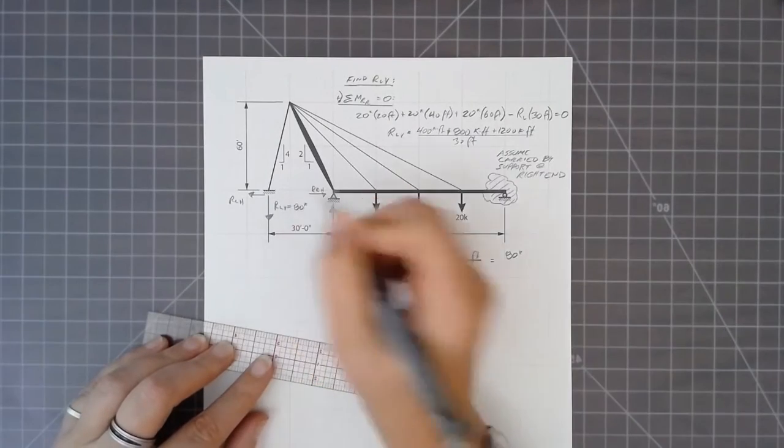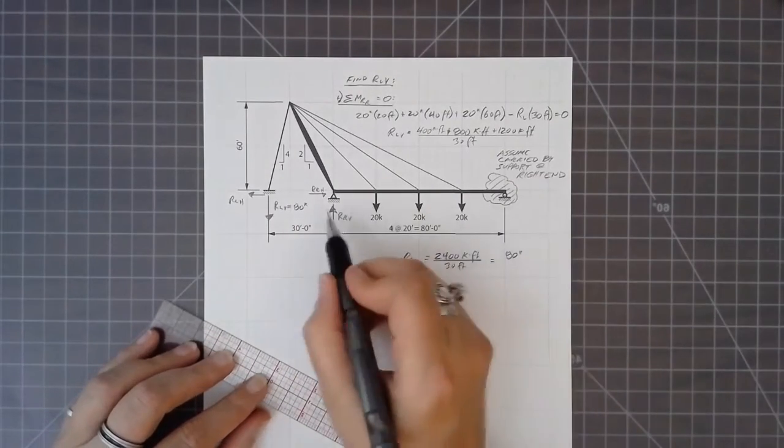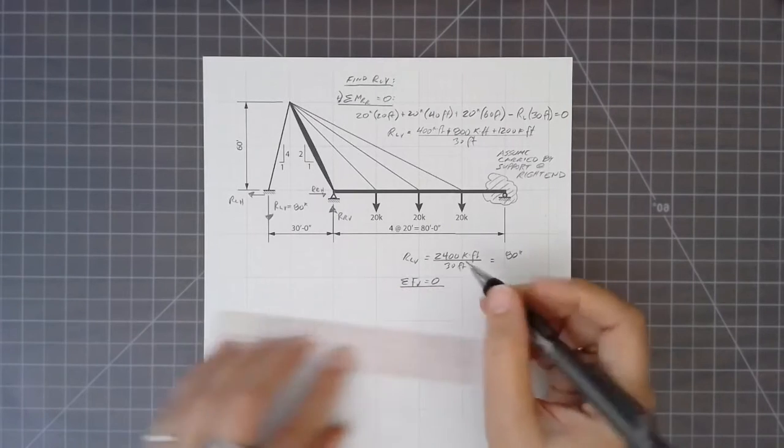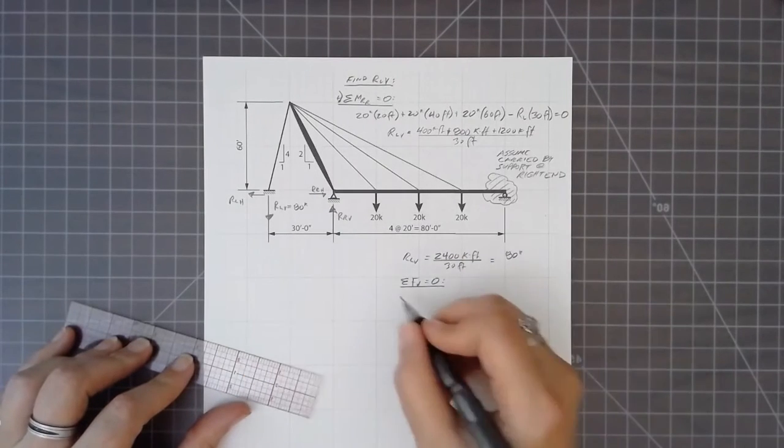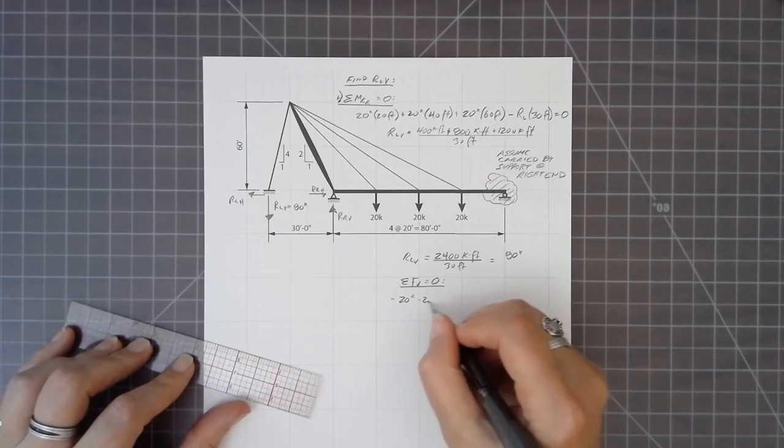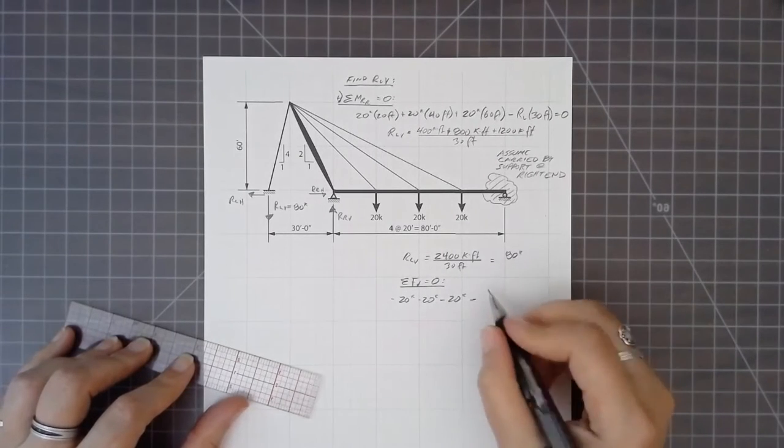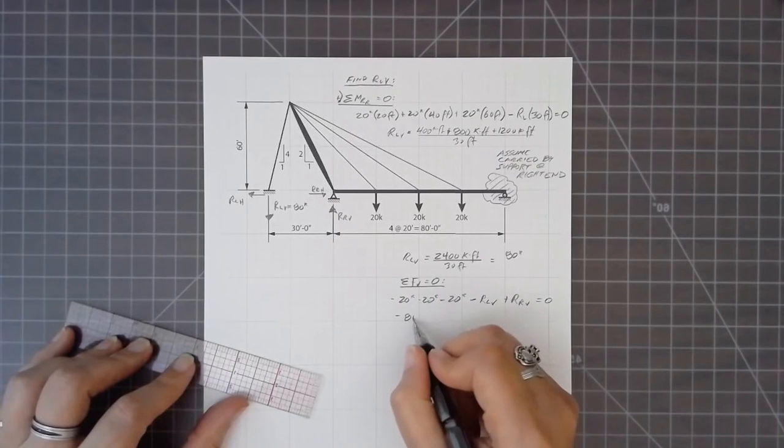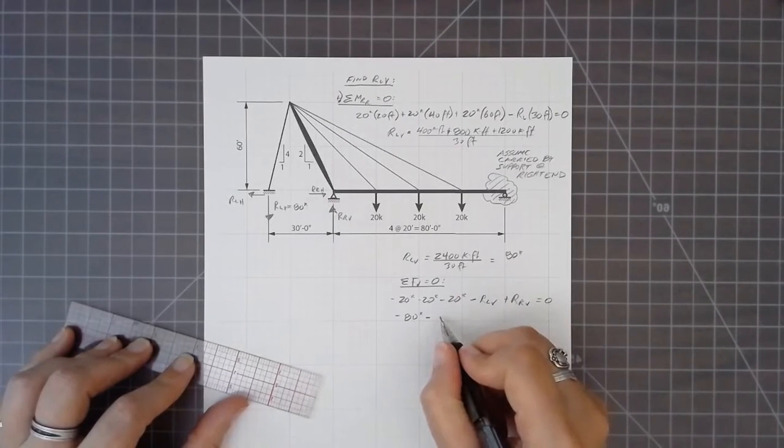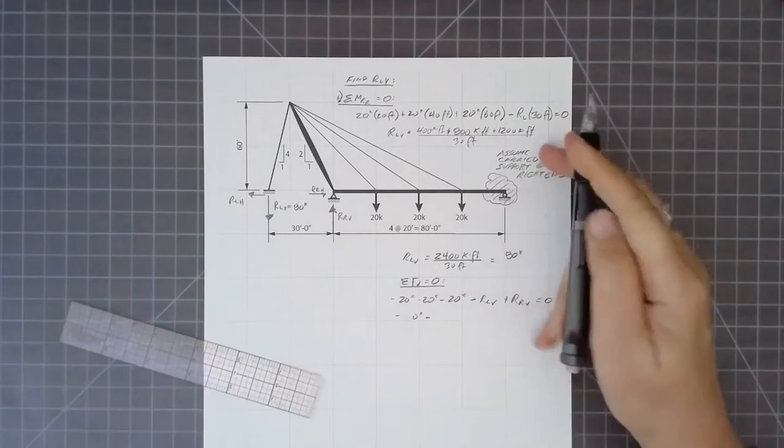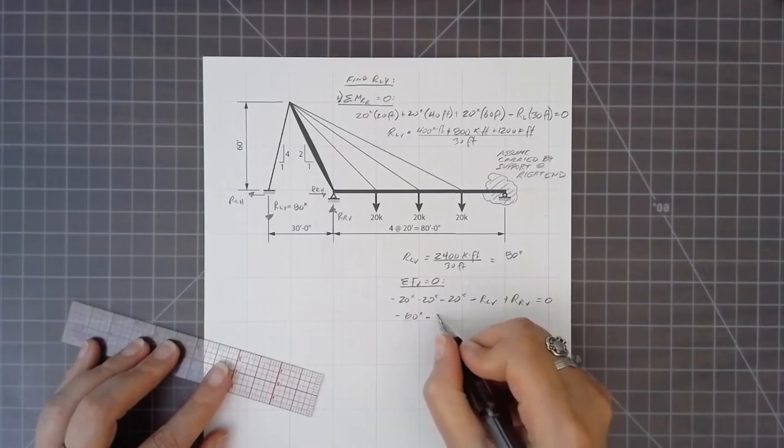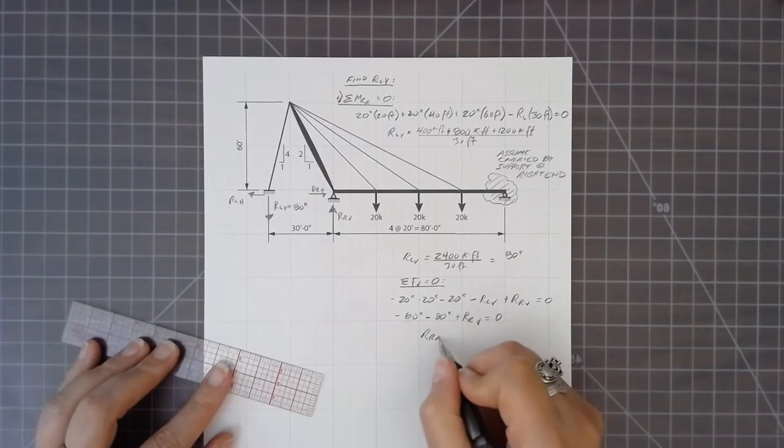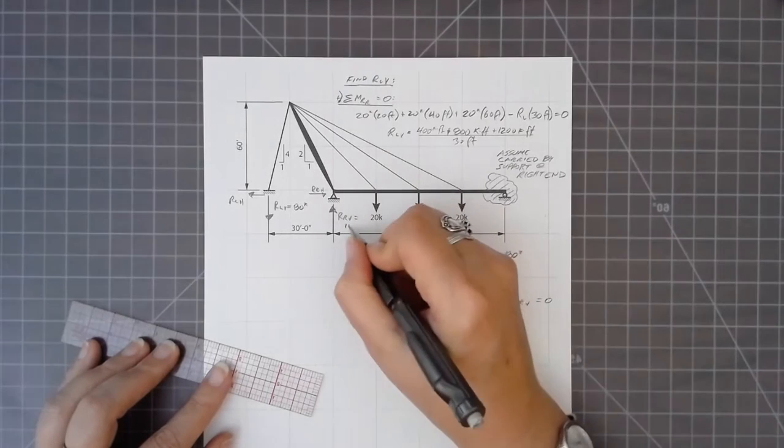So the left-hand vertical reaction then is 2400 kip-feet divided by 30 feet, and we get 80 kips as our vertical reaction at the left-hand side. Once we have that, the only remaining vertical force is the right-hand vertical reaction. So summing forces vertically here, we have the three 20 kip loads acting downward, the left-hand vertical reaction acting downward, plus the right-hand vertical reaction as the only upward force.